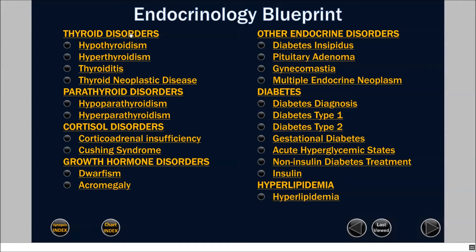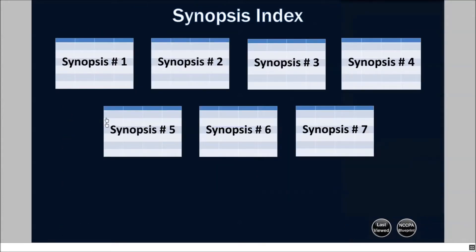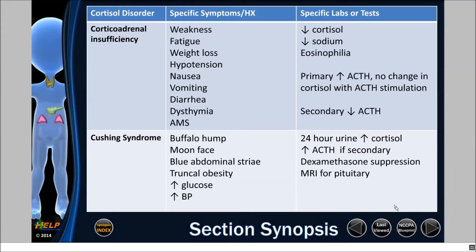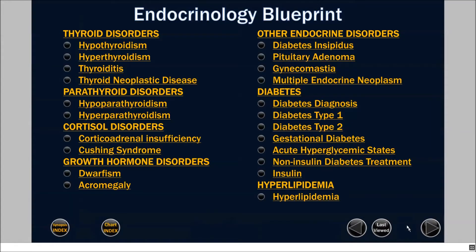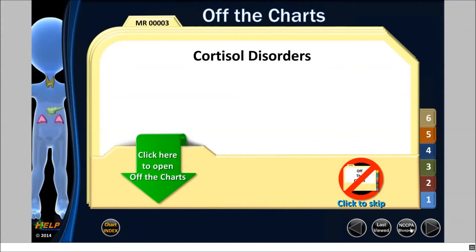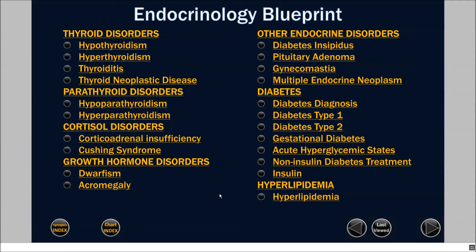You can see the headings or each of the topics one at a time. If I click synopsis index, it brings me to the index, and I can click on each section synopsis I wish to see. Or if I go back to the blueprint, I can see just the off-the-charts sections that I would like to see. It's just one more way that the blueprint in the ILM allows you to access exactly what you want when you want it.